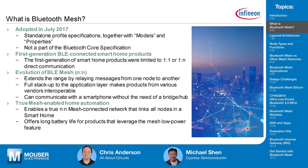When BLE first released for home automation, it was a one-to-one or one-to-many connection. For example, you have a mobile phone connecting to your light switch to turn the lights on or off. With one-to-one or one-to-many, it's a star topology, so you're limited in distance — for a Class 2 device you're limited to about 10 feet.